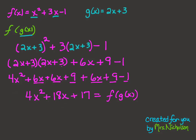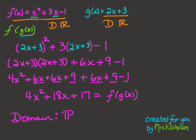The second part of this question asks us to find the domain of this function. My function here is a quadratic function, and I know that the domain of the quadratic function is all reals — any x value can be input into the quadratic function. We also need to consider the two functions that go into the composite function. f of x equal to x squared plus 3x minus 1 is also a quadratic function, so its domain is all reals. And g of x is 2x plus 3, which is a linear function — again, the domain is all reals. Since both of those domains are all reals and our composite function also has all reals, that is our domain: all real numbers.